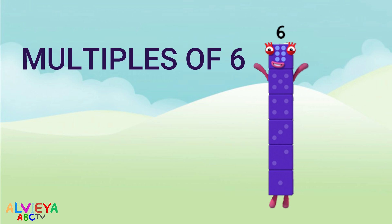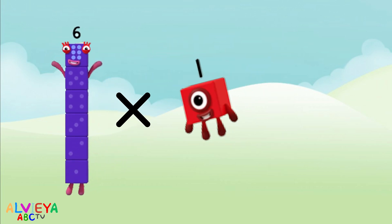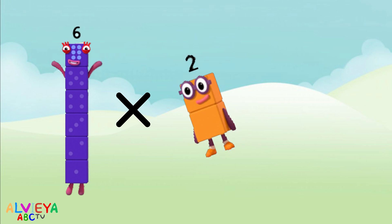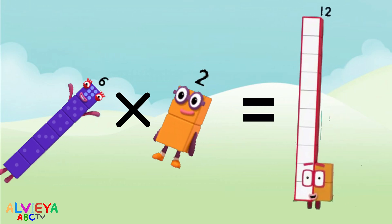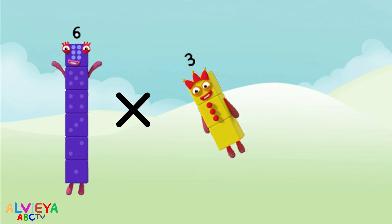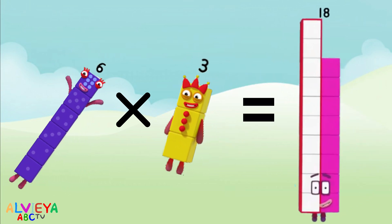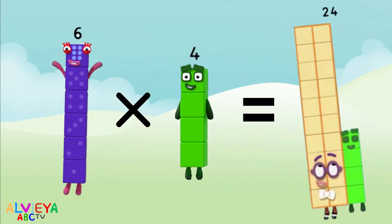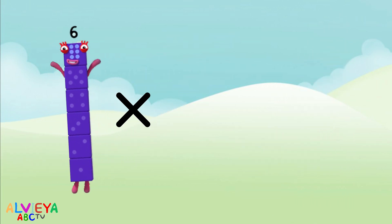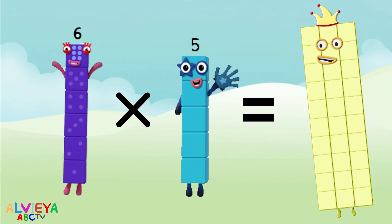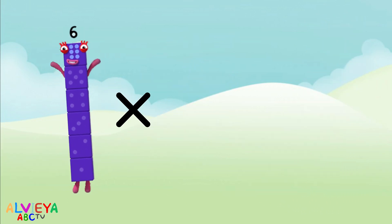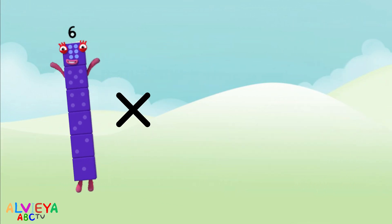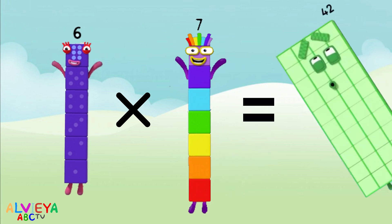Six times one equals six. Six times two equals twelve. Six times three equals eighteen. Six times four equals twenty-four. Six times five equals thirty. Six times six equals thirty-six. Six times seven equals forty-two.